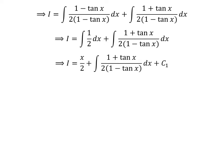As half is a constant, the integral of half is half of x. Thus i is equal to half of x plus integral of 1 plus tangent of x upon 2 times 1 minus tangent of x with respect to x, plus capital C1. Capital C1 is the arbitrary constant of the indefinite integral — never forget to add this constant.